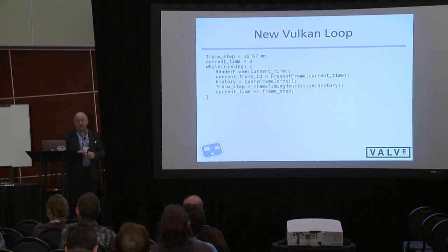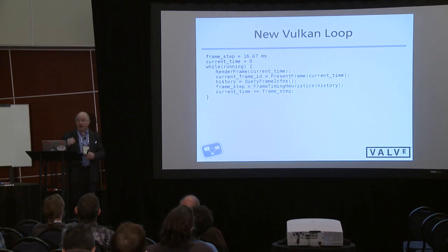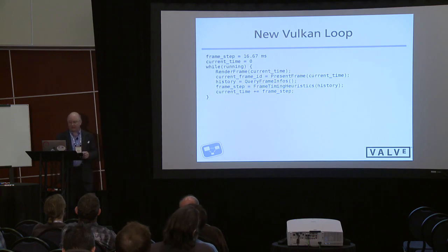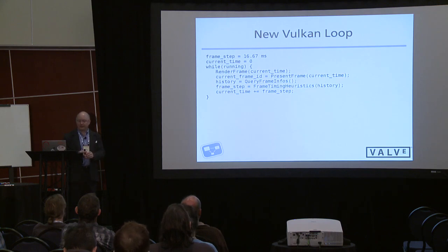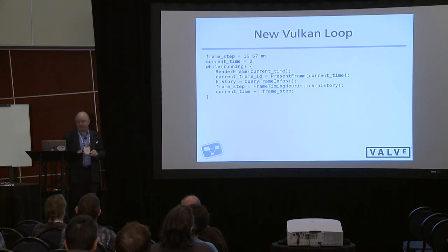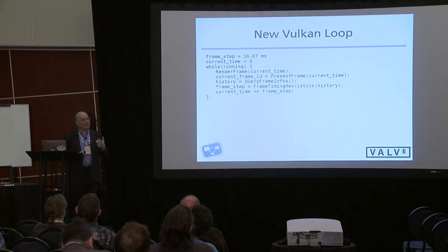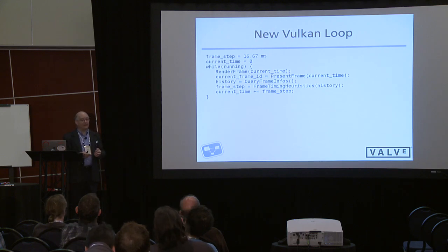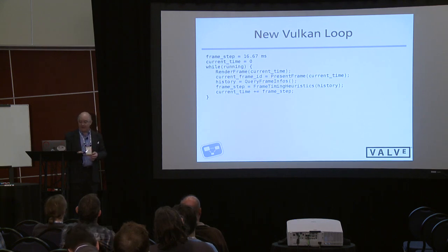The new Vulkan loop looks like this: I render a frame for the current time I want to show on screen, present that frame at that time — which is obviously a time in the future — then I go find out when historically frames were presented. I get whatever feedback the system provides on when frames were displayed, figure out a reasonable frame step given what I've been managing in the past, and compute the next display time based on that. Here you can see we've closed the loop — the display system is providing feedback and I can keep it controlled.